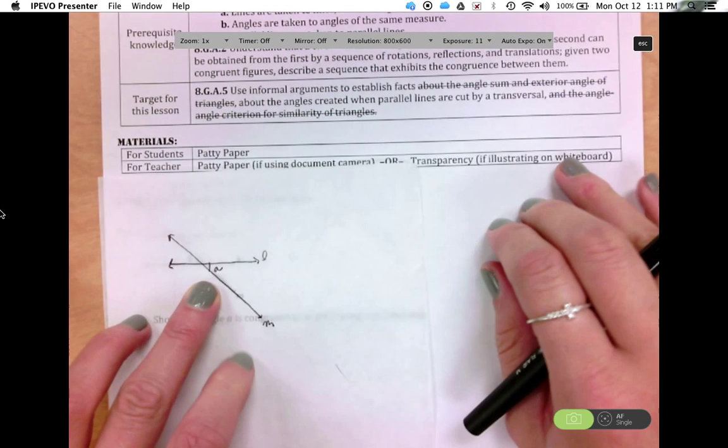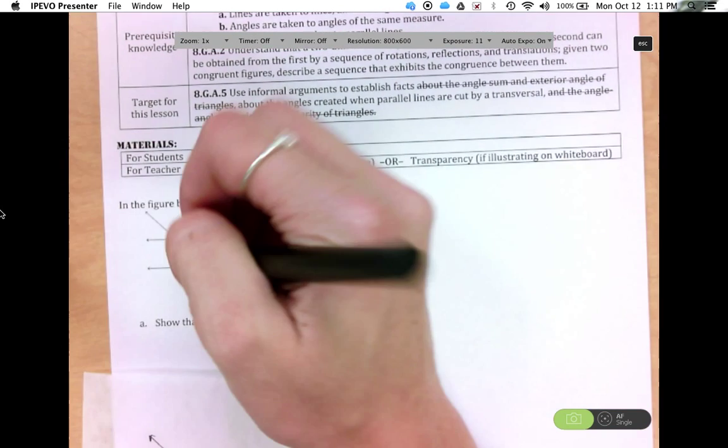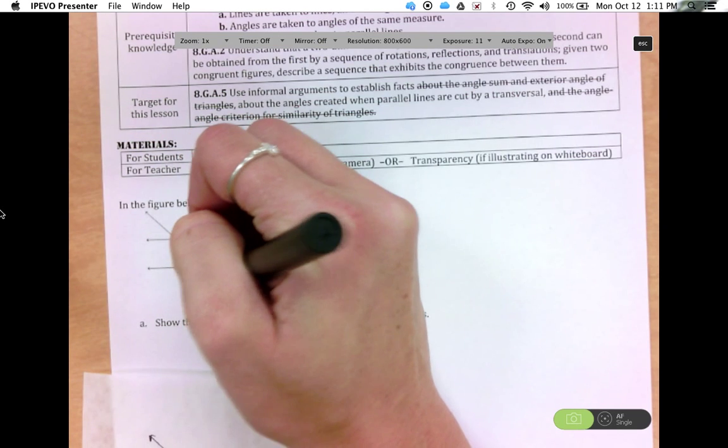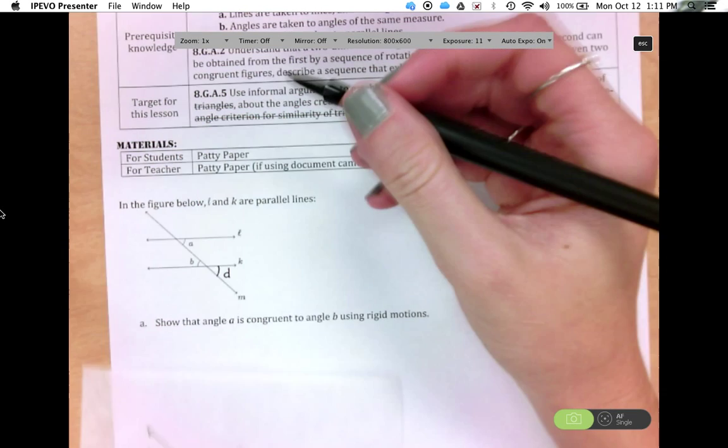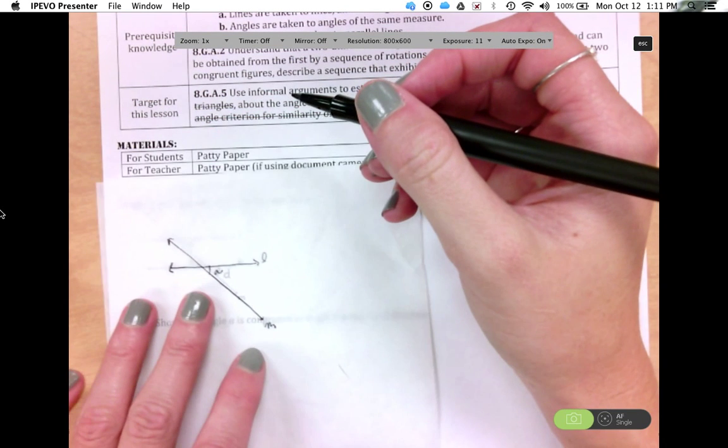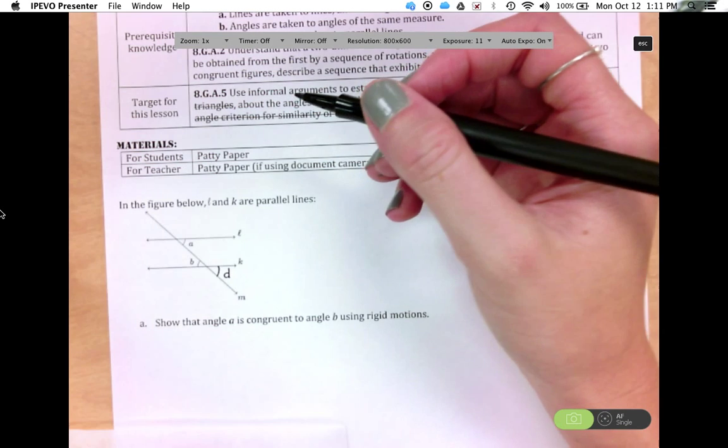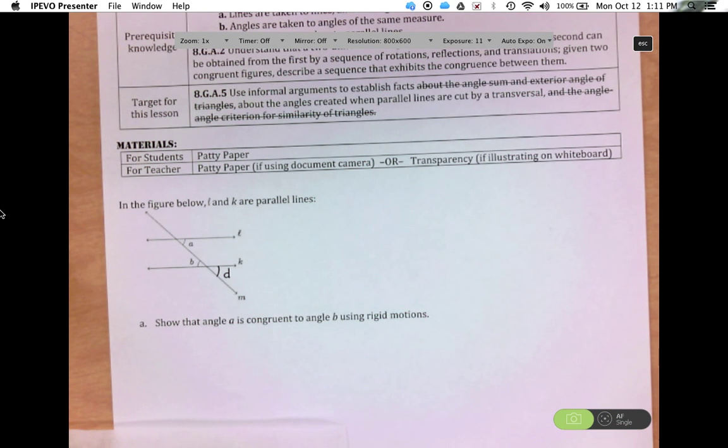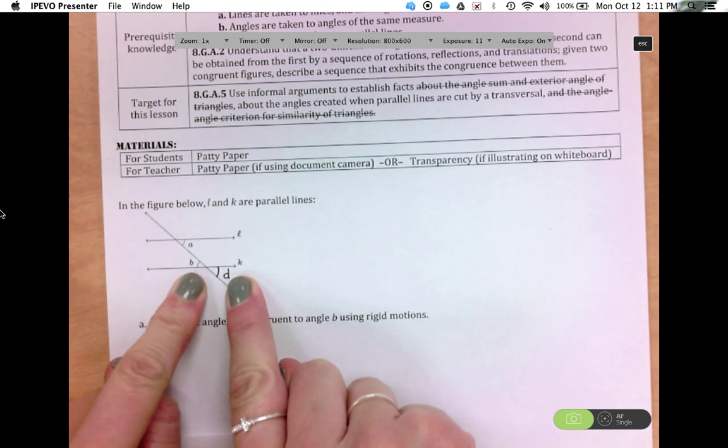So then we know that this angle here was mapped onto this angle here below. And so we'll have to name that angle so we can reference it later. So let's name that D. So since that translation mapped A to D, then we know that A is congruent to D.